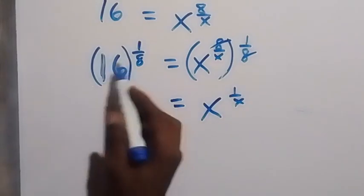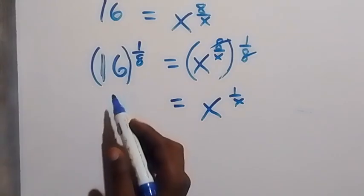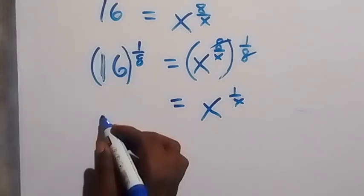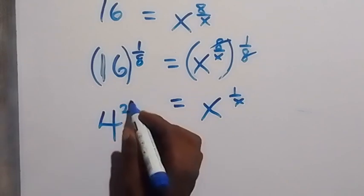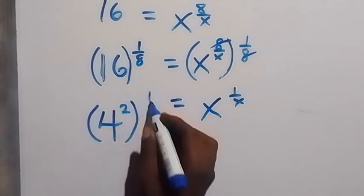And on this side as well, we can express 16 as 4 squared. So we can say this is 4 squared. That's 16. Then raised to the power of 1 over 8.